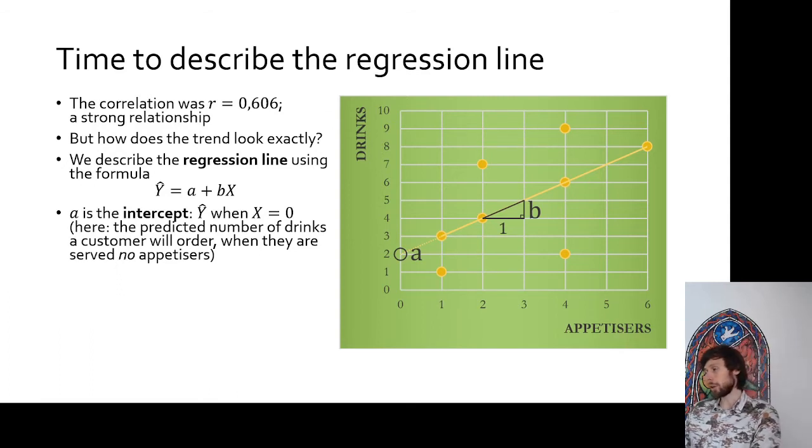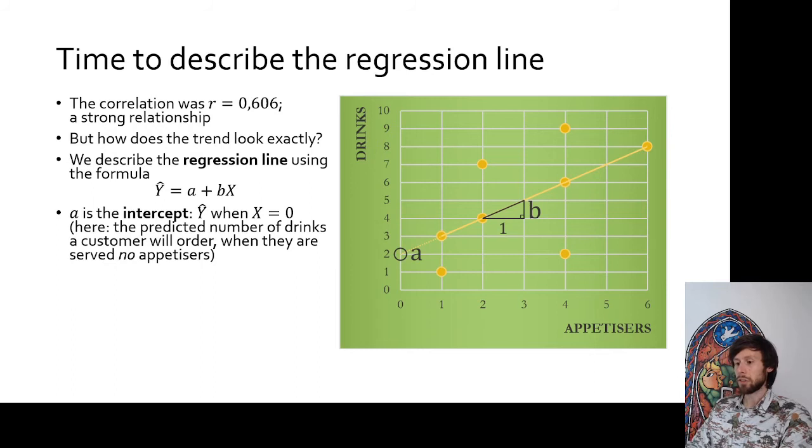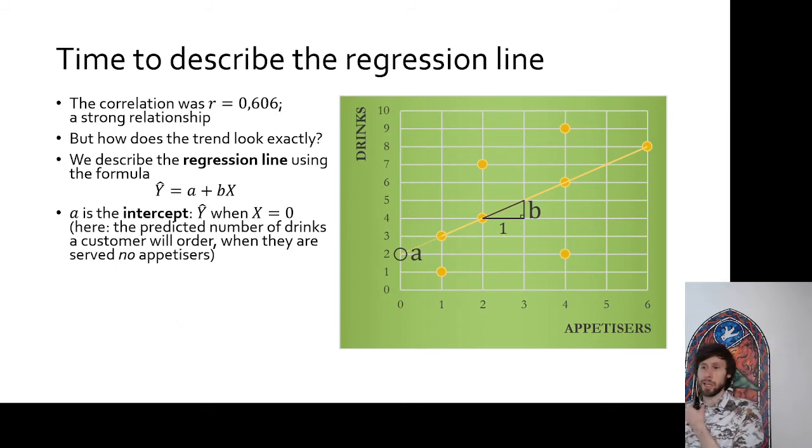In this way, an intercept often functions as a sort of baseline. Baseline performance in this case of restaurant visitors, restaurant guests. And of course, we are interested to see how an increase in appetizers might change that behavior. That is the question we want to answer by describing this trend line, right? But there is an important baseline as it determines the general height of the line, you could say.